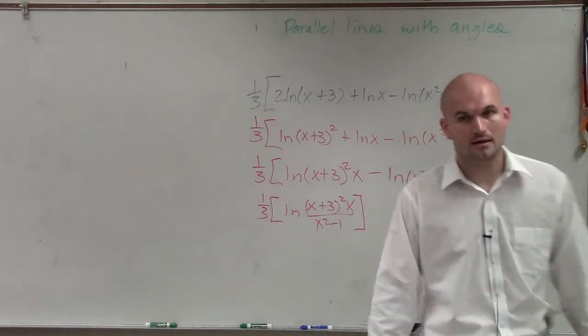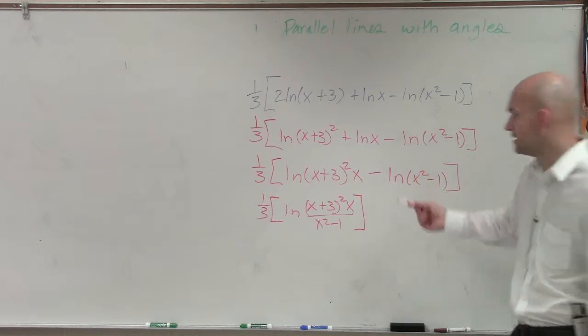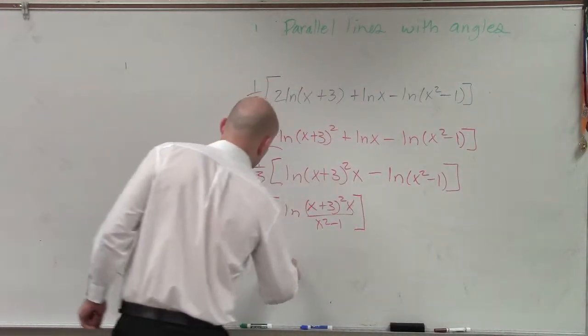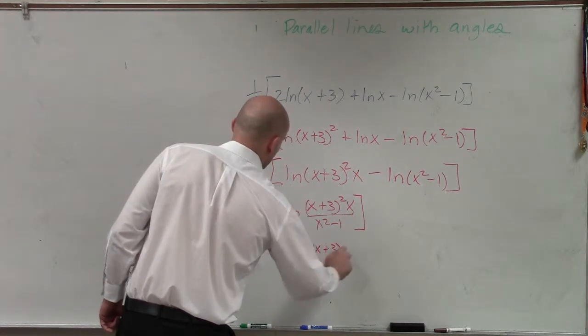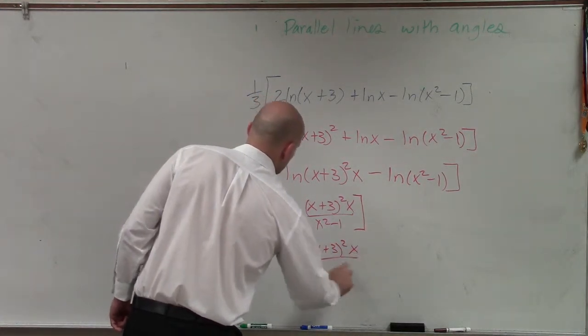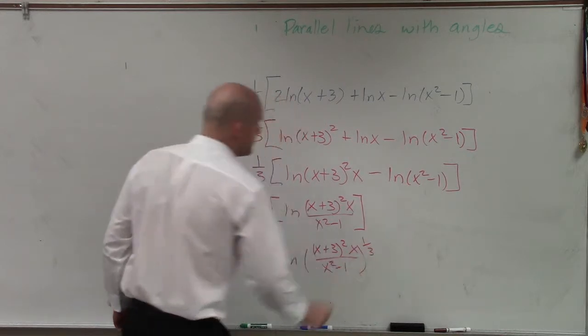Then I know that I can now take the one-third and bring it up to the power of the exponent. So now this is going to be ln of (x plus 3) squared times x, divided by (x squared minus 1), raised to the one-third power.